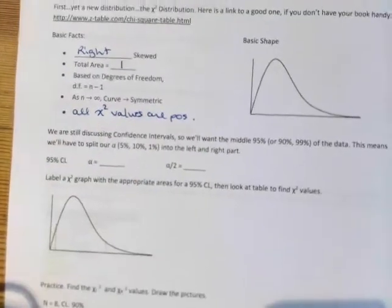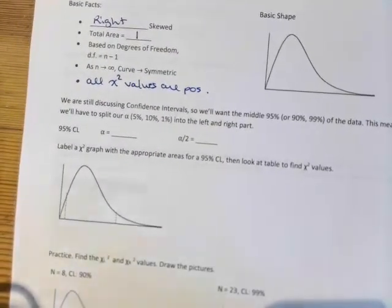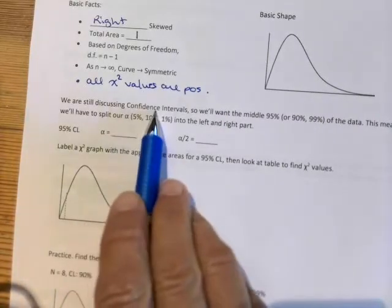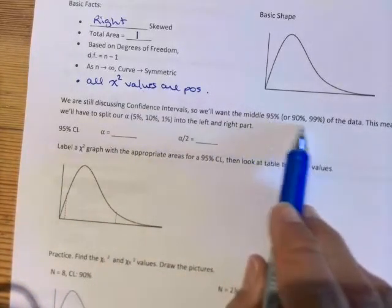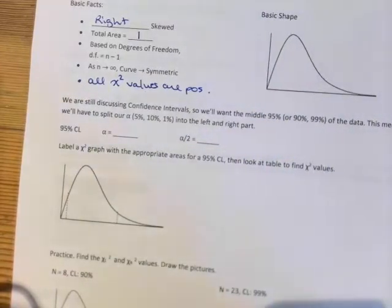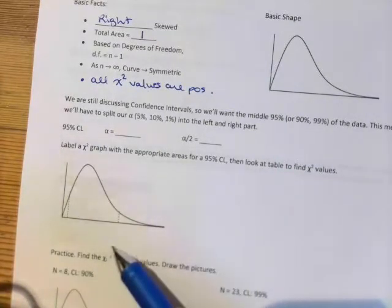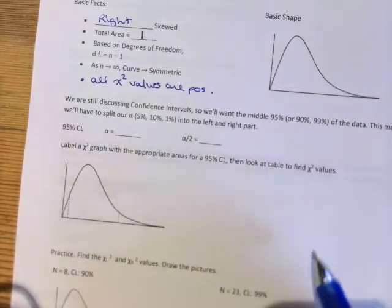So before we go finding confidence intervals, we're going to practice just finding those critical values, those chi-square values. So confidence intervals, we're talking about those middle values, the middle 95%, 90%, 99%, whatever confidence level it is you're looking for. So this means that we have to split the alpha, the left over, into the left and right part.